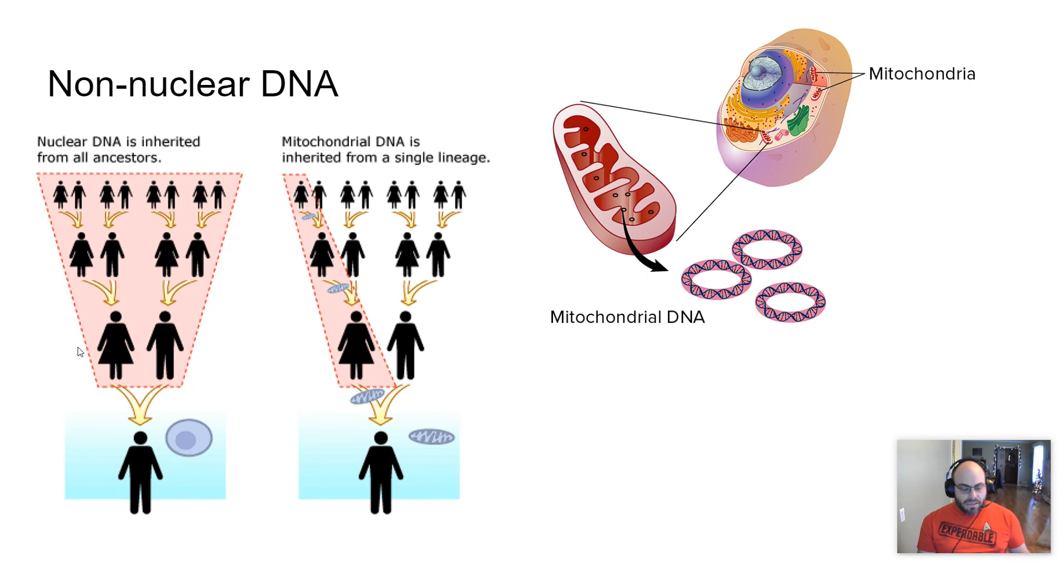And the last thing is called non-nuclear inheritance, non-nuclear because it's not coded for in the nucleus, but there is DNA in other parts of your body. Remember the mitochondria has DNA. Well, all mitochondria are inherited from your mother because the sperm cells do not donate mitochondria during fertilization. Only the egg cell has that. The mother, of course, is the maker of the egg cell, has those mitochondria.